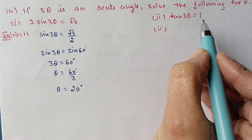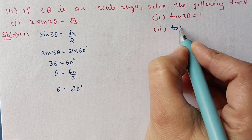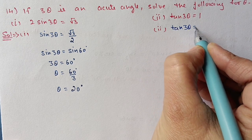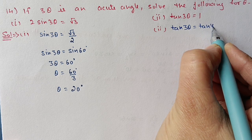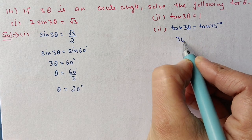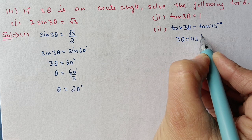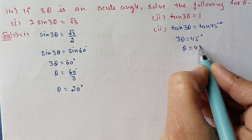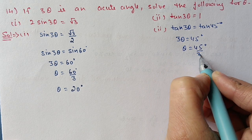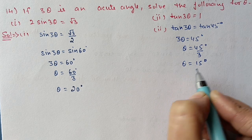For the second part, we change 1 into a tan value. 1 is the value for tan 45 degrees. By comparison of angles, 3 theta equals 45, which means theta equals 45 by 3, so theta equals 15 degrees.